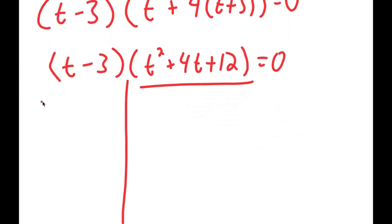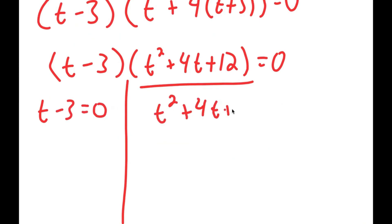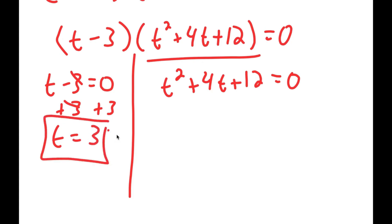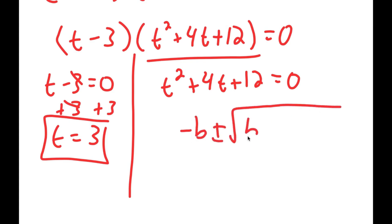This gives me two equations: t minus 3 equals 0 and t squared plus 4t plus 12 equals 0. Obviously, t minus 3 equals 0 gives t equals 3, which we already know. For t squared plus 4t plus 12 equals 0, we're going to have to use the quadratic formula.